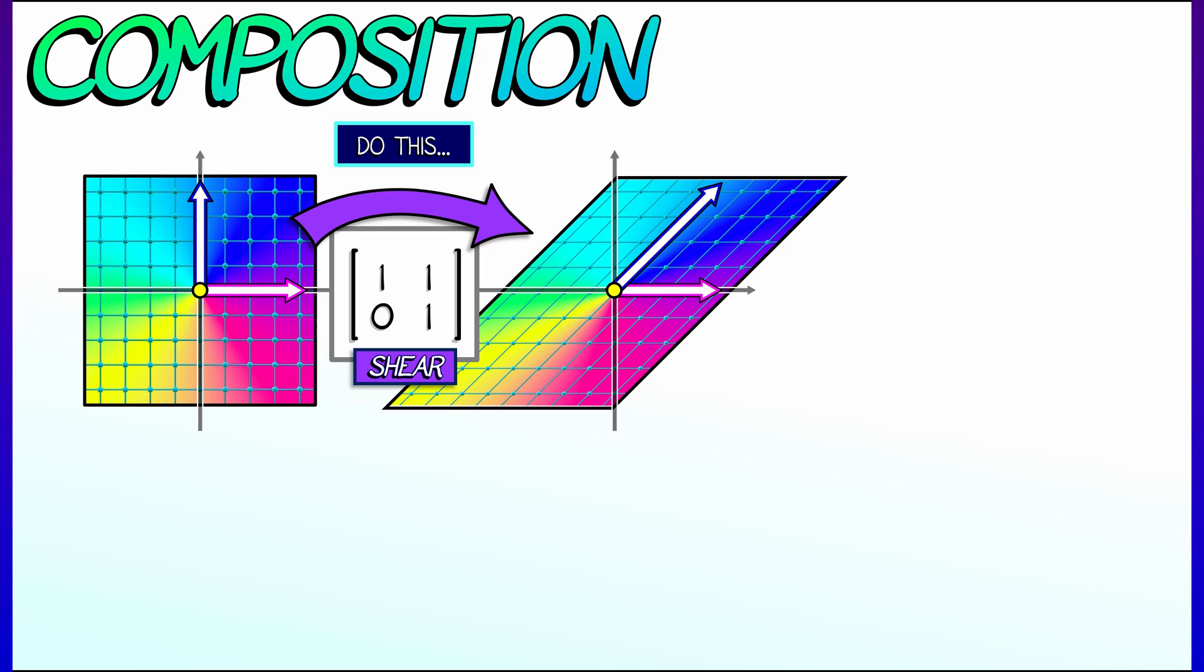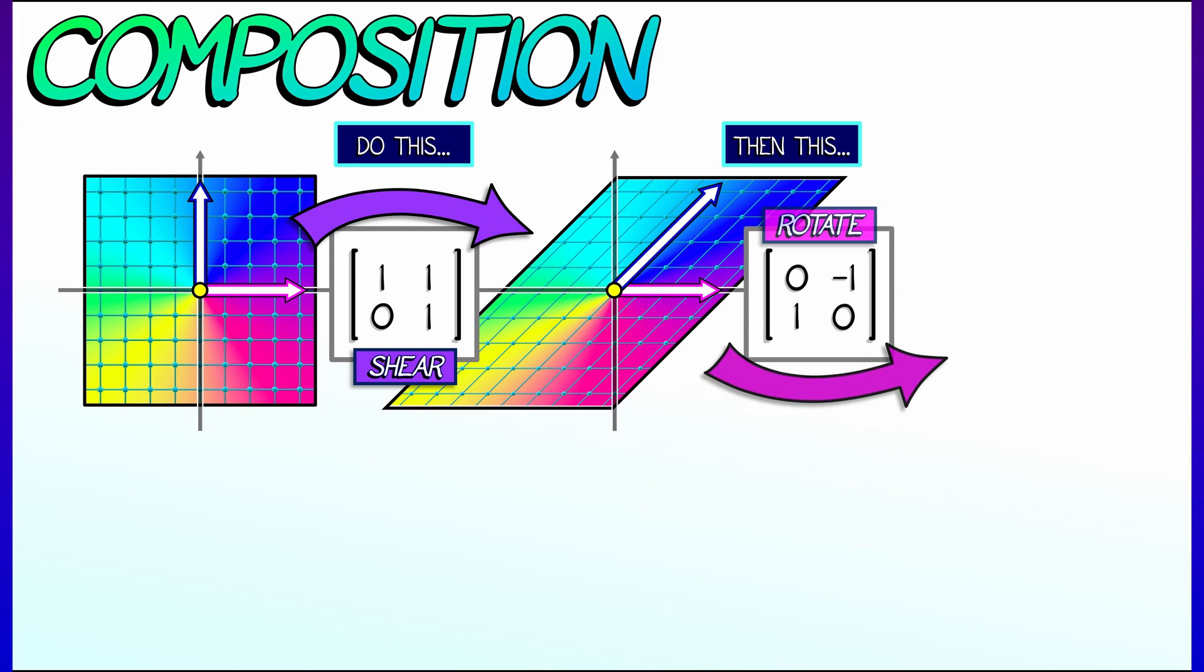Okay, so let's say we do that, and then we do another linear transformation after that. Let's say a rotation. Let's say 0, negative 1, 1, 0. That's my friend J, rotates counterclockwise by 90 degrees, by pi over 2.